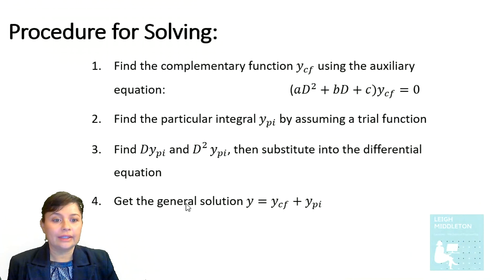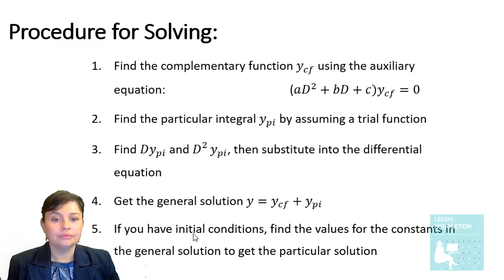You then get your general solution. So your final y is going to be made up of your complementary function plus your particular integral, and you will have unknown values in there. So a and b. That is your general solution. If you have initial conditions, you can then find the values of those constants in the complementary function in order to find what your particular solution is.